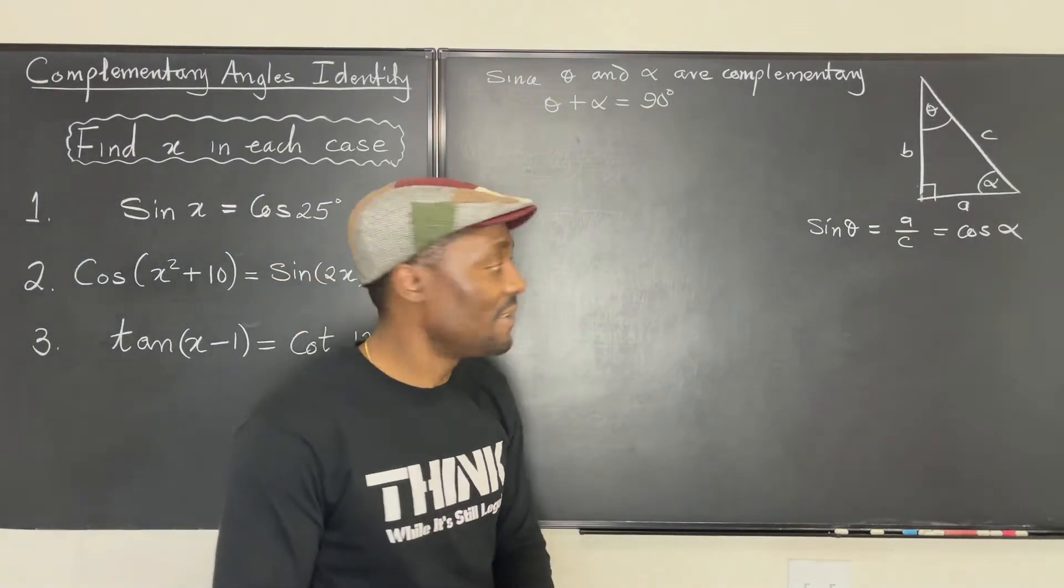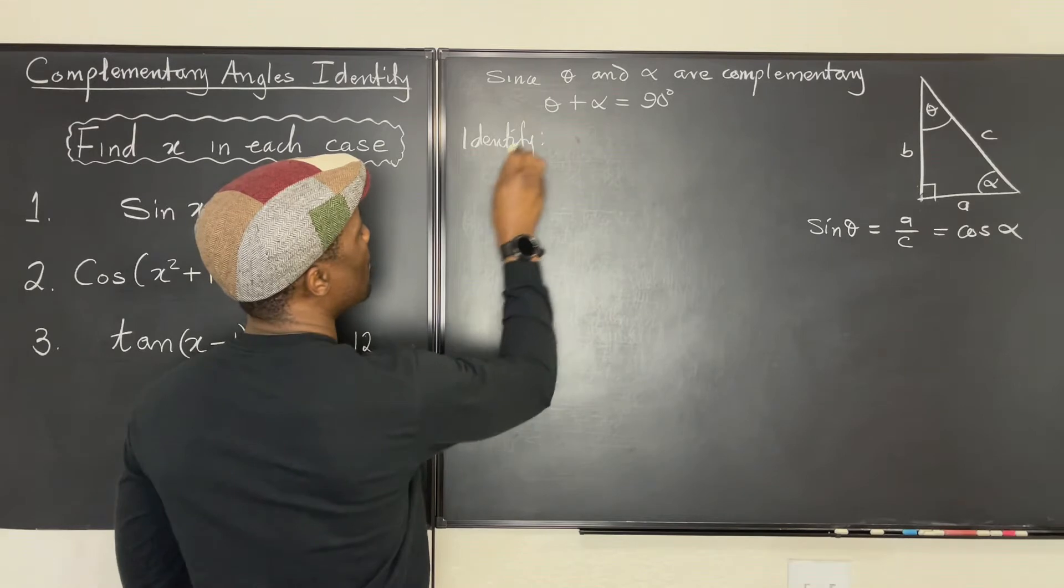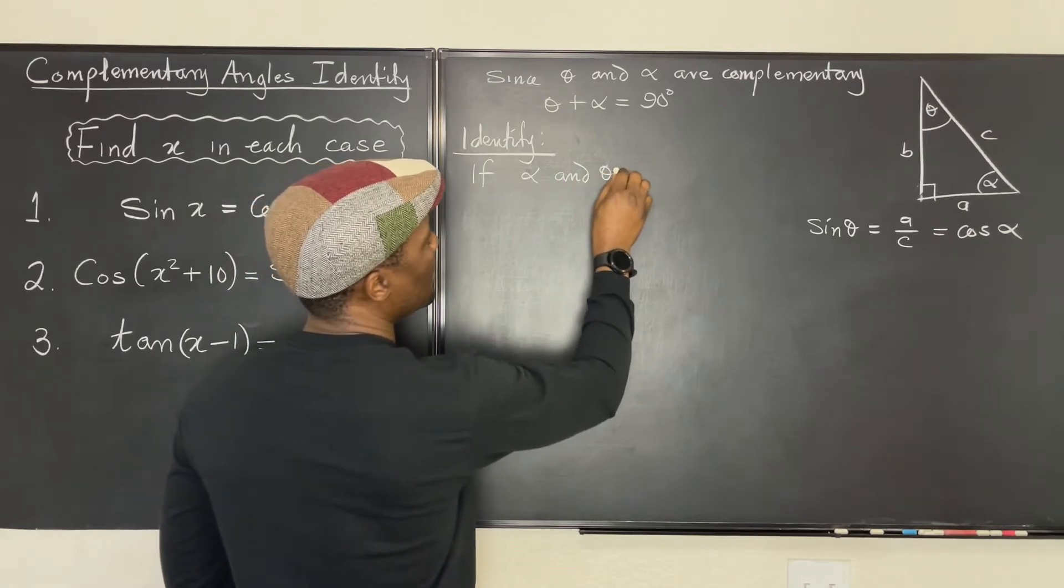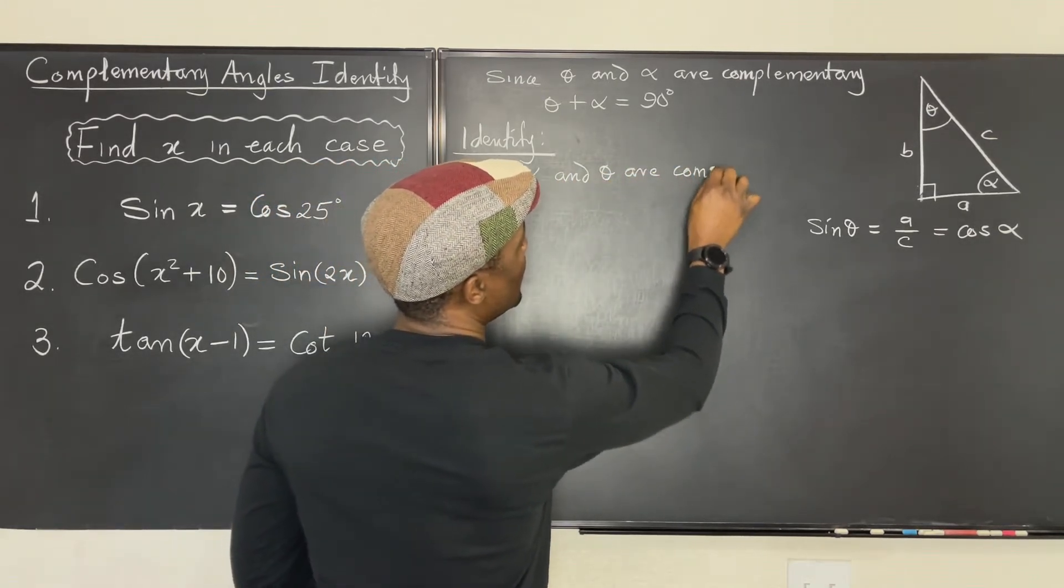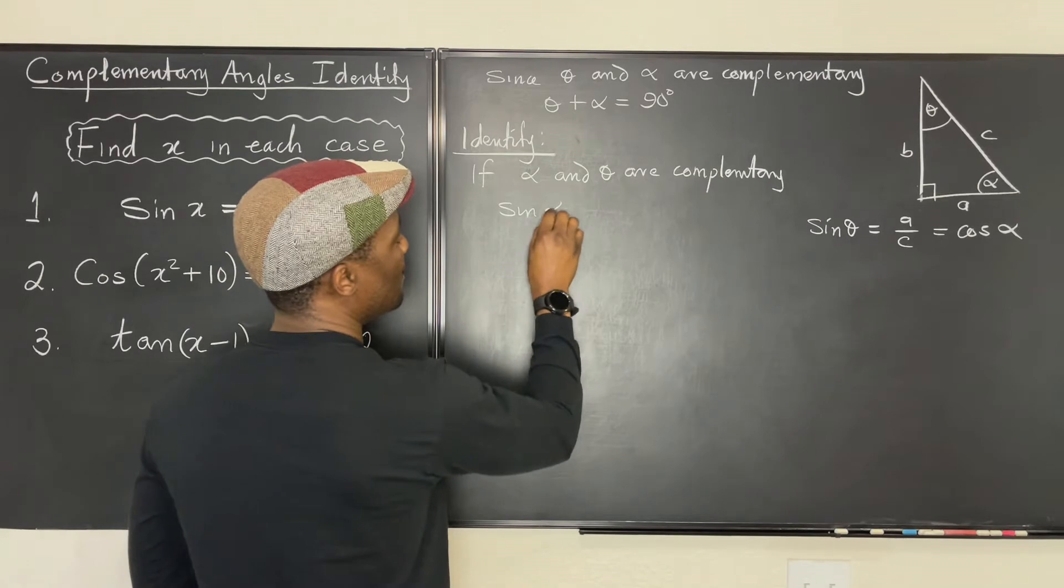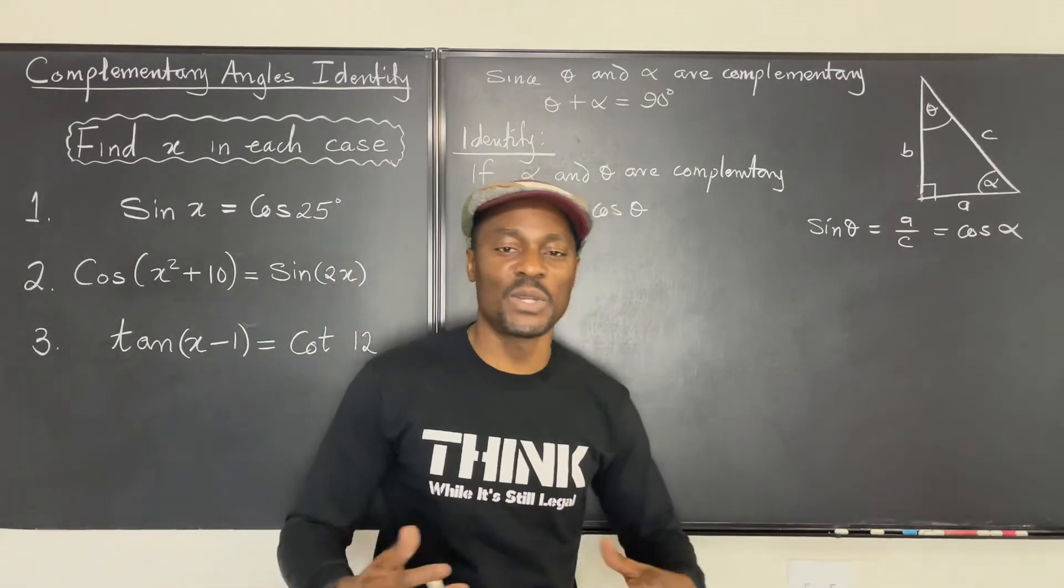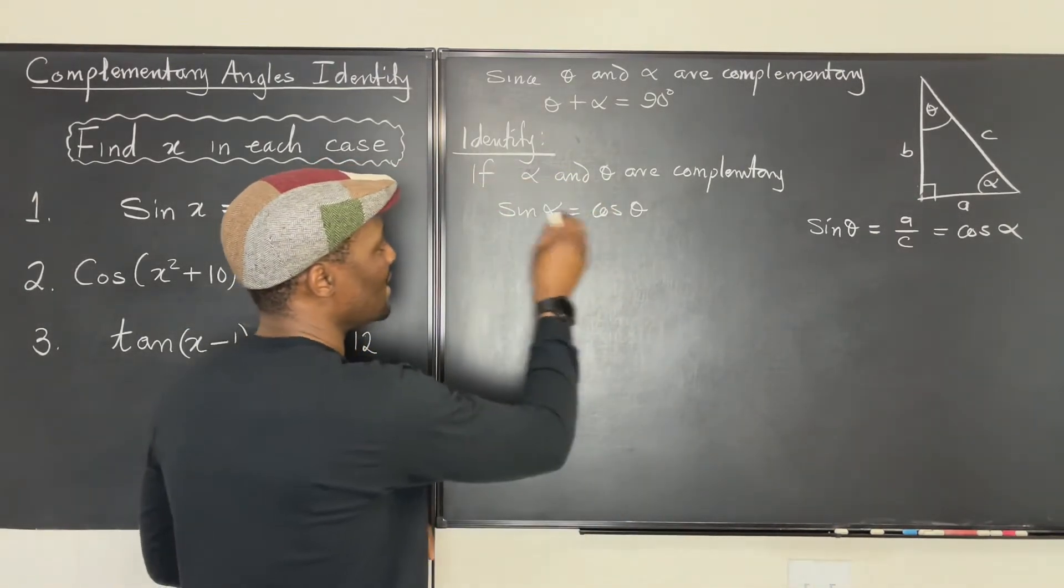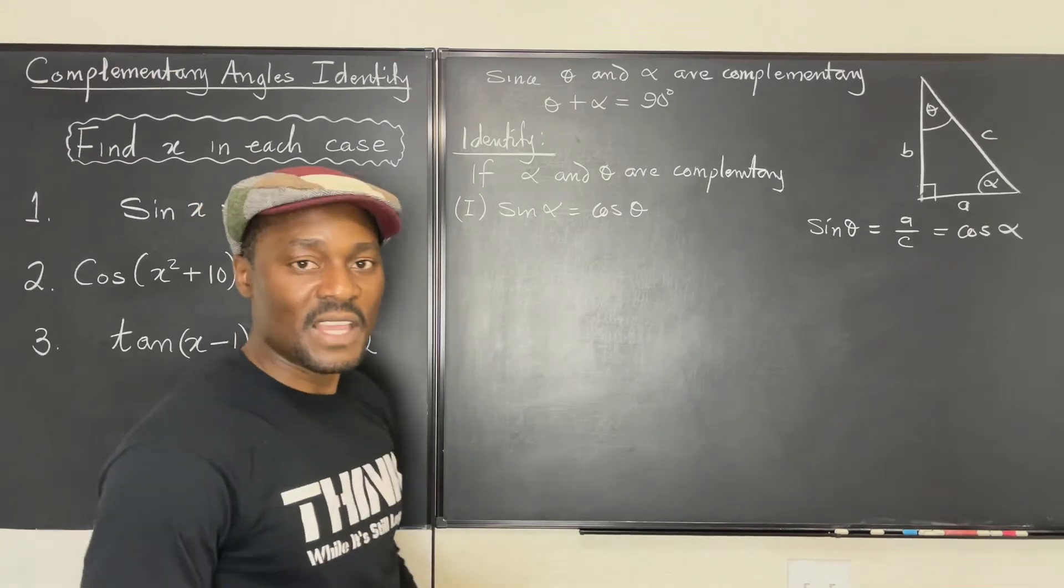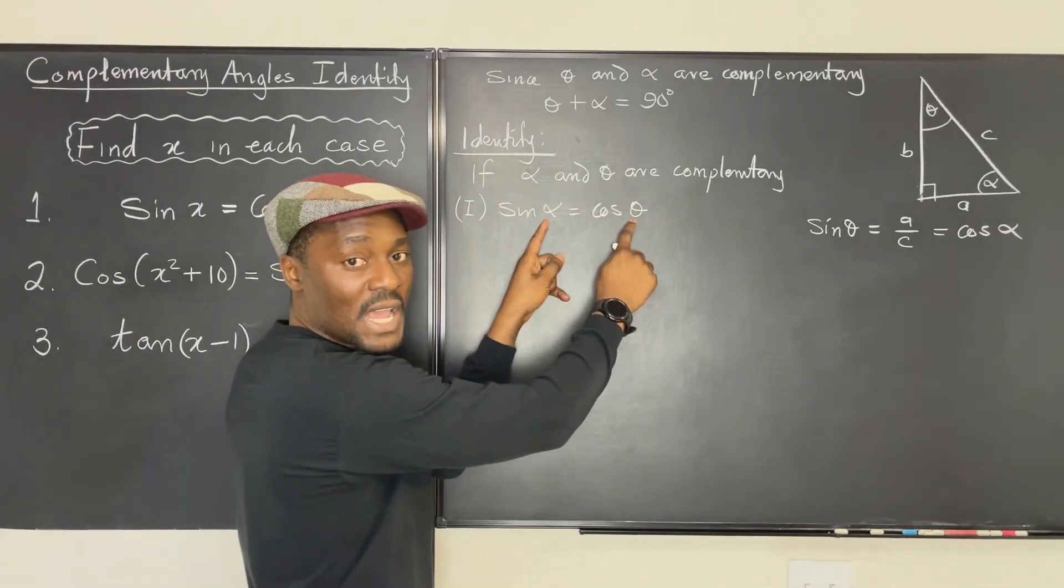So what is the identity? Number one. If alpha and theta are complementary, then sine alpha equals cosine theta, or sine theta equals cosine alpha. It doesn't matter which one you call theta or alpha. This is the first identity, number one. You want to make sure you register this one.